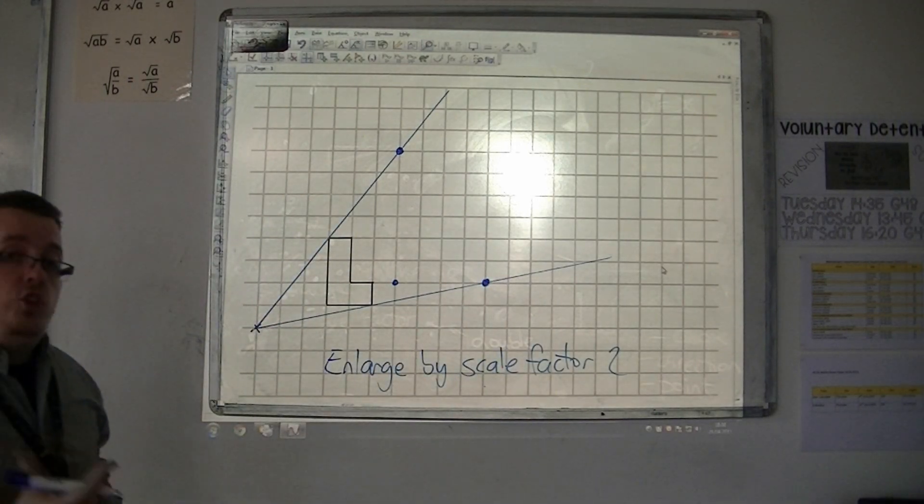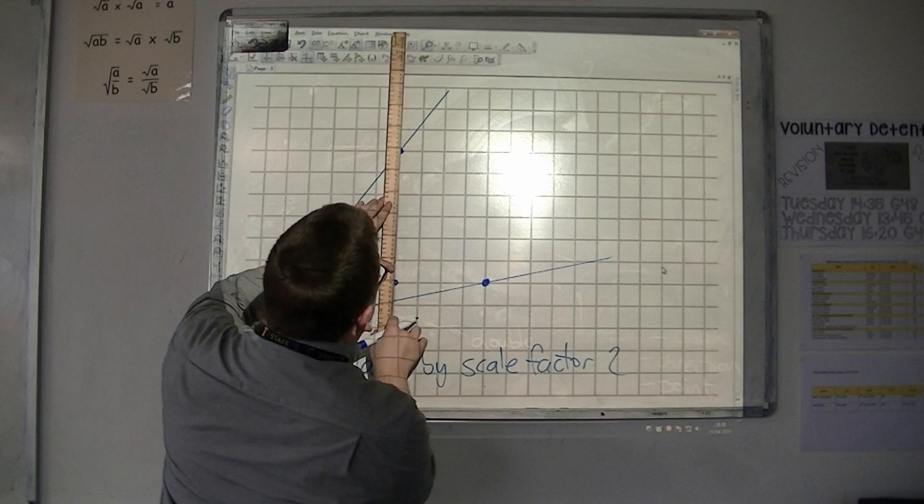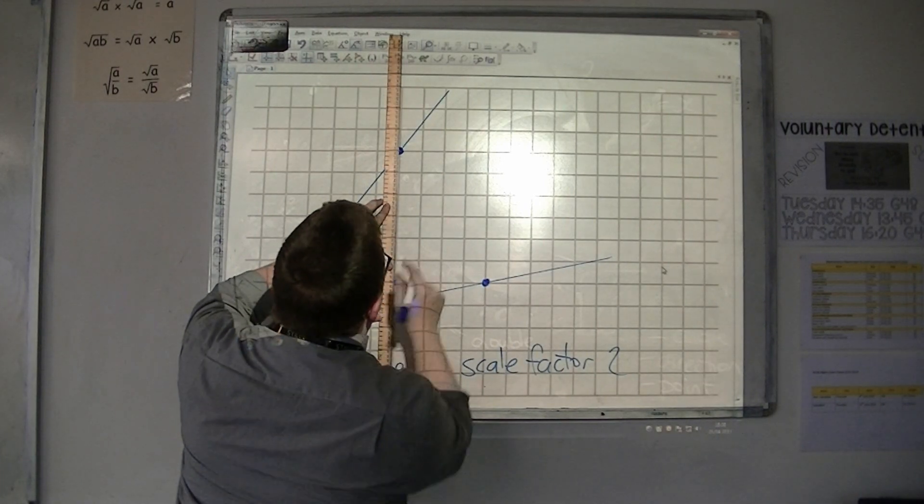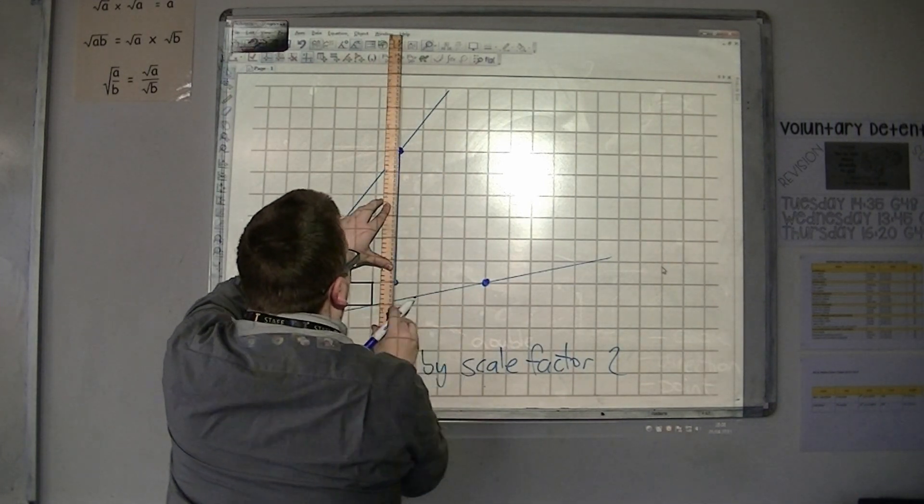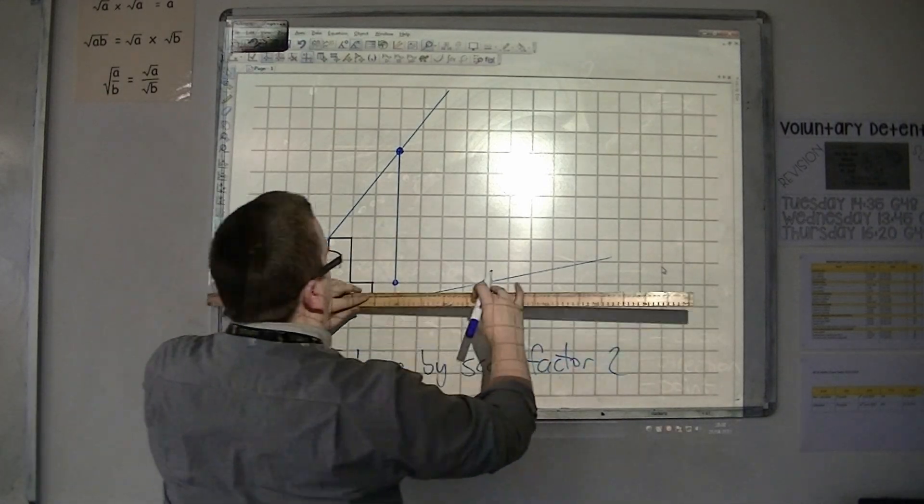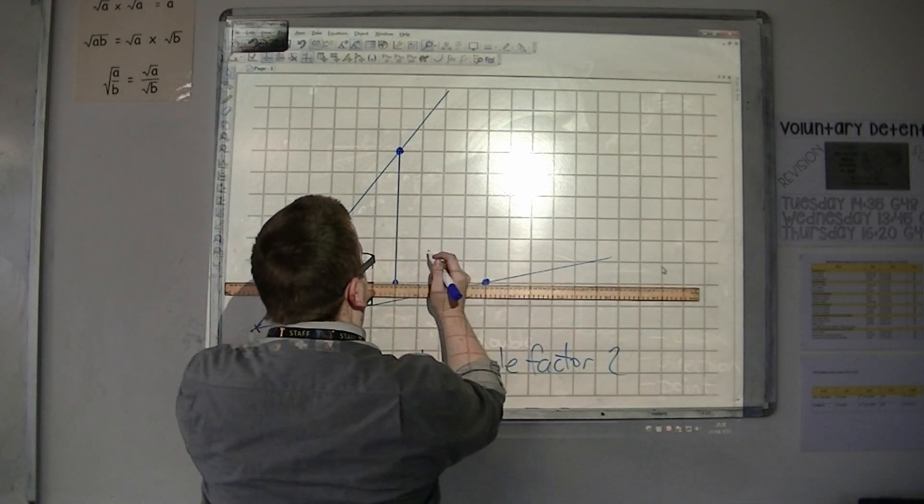So now I should have enough points to start drawing the shape. So that is this side extended. This is the bottom of the shape here.